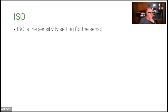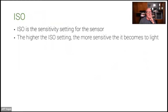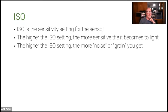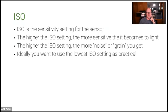The answer is not always to use a super high shutter speed to freeze all the action. ISO is essentially the sensitivity setting for the sensor. The higher the ISO setting, the more sensitive to light it becomes — you can fix the shutter speed and aperture and change your ISO. The higher you go, the brighter the picture will be, but it will introduce more noise or grain.